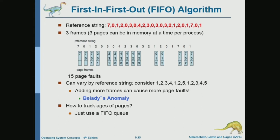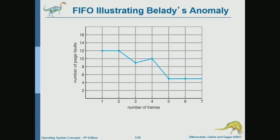This is Belady's anomaly. This algorithm is so bad that sometimes you may increase the number of frames but still get more page faults. Logically, increasing the number of frames should give fewer page faults. But Belady observed and constructed examples where increasing frames results in more page faults — which is anomalous, unexpected, and counterintuitive. All we need to know is that FIFO is not a good algorithm because it does not take into account how frequently a page is referenced.